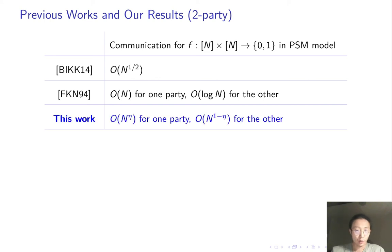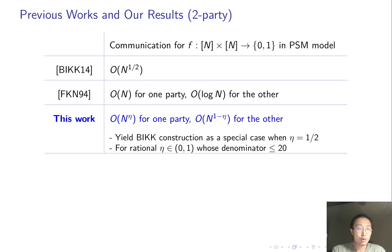In this work, we show an almost smooth trade-off. One party sends n to the eta bits, while the other party sends n to the one minus eta bits, as long as the product is no less than n. You see, the trade-off is almost smooth because we only prove that trade-off for rational eta whose denominator is no more than 20.